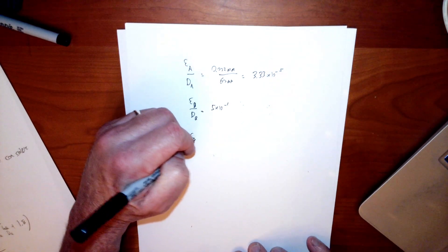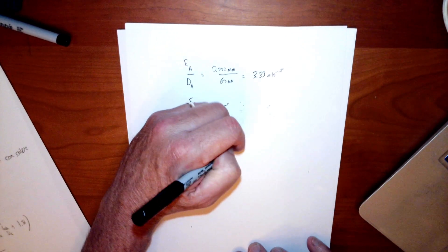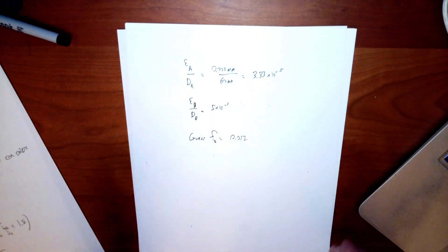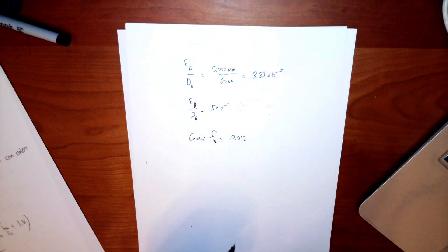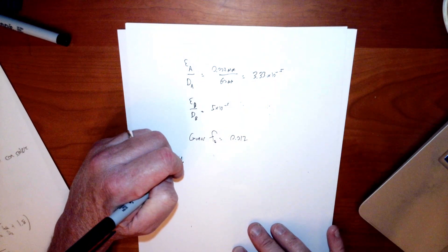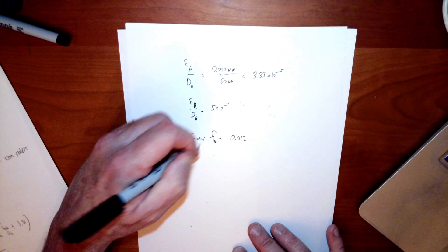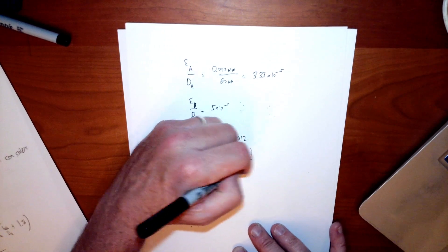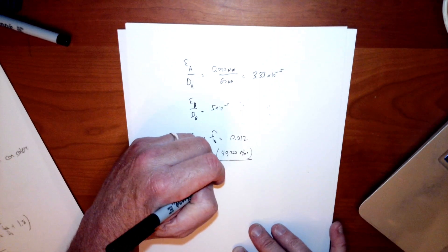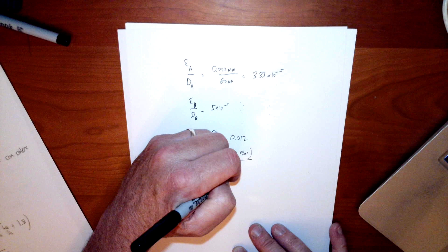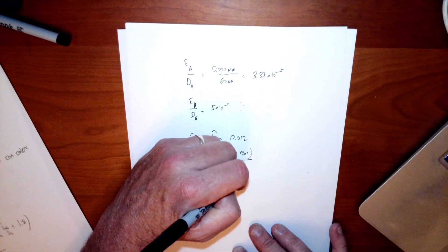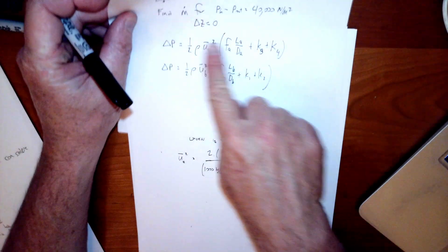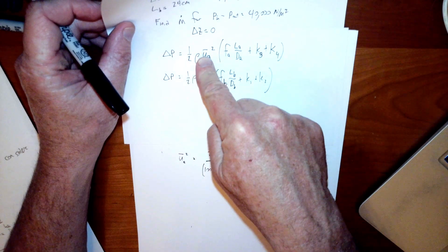All right, so let's go ahead and do it. We're going to guess. We'll start with pipe A. I'm going to guess an FA equal to 0.012. That's based on looking at the chart, the Moody diagram based on this 3.33 times 10 to the minus fifth. It seems like that's not a terrible guess. And then if I do that, I can solve for UA squared based on that pressure equation. So I get two times delta P, which is 40,000 newtons per meter squared, divided by the density 1000 kilograms per meter cubed for water, divided by also FA LA over DA plus 1.8, which is just K3 plus K4. So that's what I've solved this equation for UA squared.